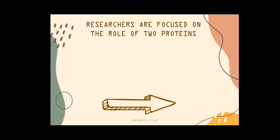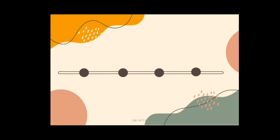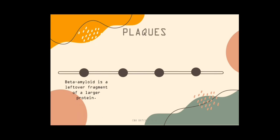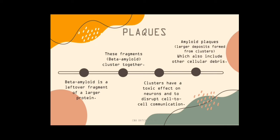Researchers are focused on the role of two proteins: plaques and tangles. Plaques — beta-amyloid is a leftover fragment of a larger protein. These beta-amyloid fragments cluster together, and their clusters have a toxic effect on neurons and disrupt cell-to-cell communication. These are known as amyloid plaques, which also include other cellular debris.